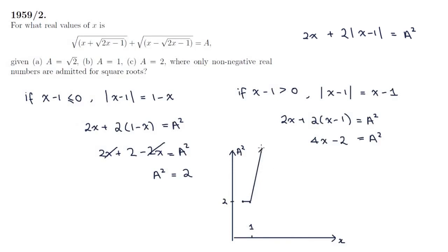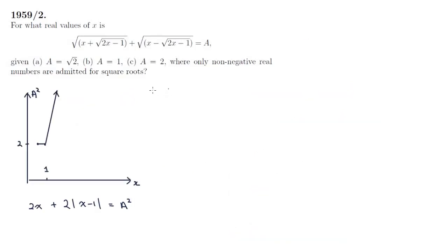We can now read off this graph for our values of x, the three cases of a. So case 1, a is equal to root 2, so a squared is 2. Going back to our graph, we know that a squared is 2 in the region x between half and 1. So that's our answer for part a.